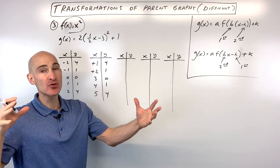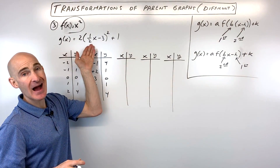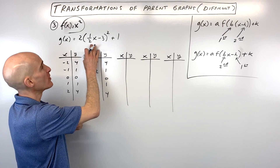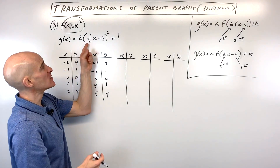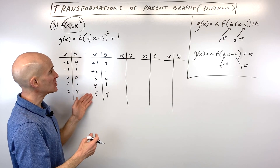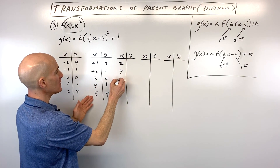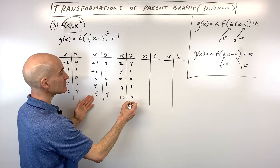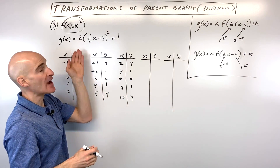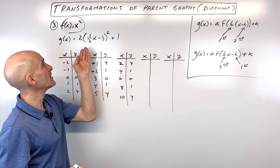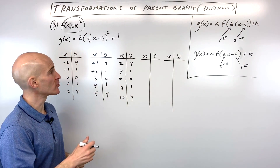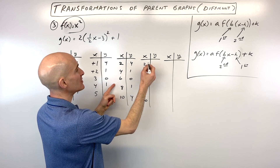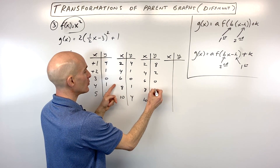Next, focus on the b value of 1/2, which has the opposite (reciprocal) effect — we actually multiply x-coordinates by 2, a horizontal stretch. So 1, 2, 3, 4, 5 become 2, 4, 6, 8, 10, while y-values remain unchanged. Then the a value of 2 applies a vertical stretch, multiplying y-values by 2. The y-values become 8, 2, 0, 2, 8, while x-values stay at 2, 4, 6, 8, 10.